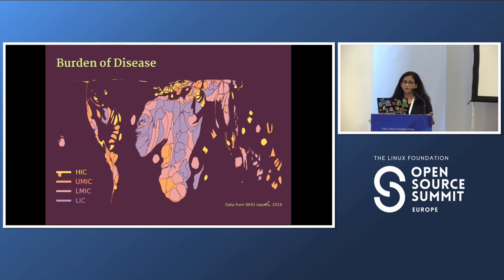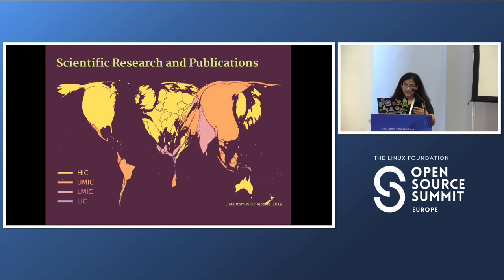This view becomes even more skewed when we look at the burden of disease. A large part of the Global South — low-income populations residing in low-income countries — bear the largest burden of communicable and non-communicable diseases. The picture becomes even more bleak when we look at scientific literature, because it's generated from high-income countries due to abundance in infrastructure and resources, severely putting a large part of our world at a disadvantage, as these diseases get neglected in mainstream research.